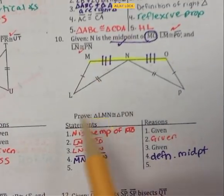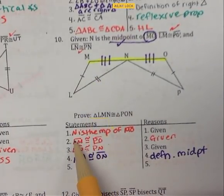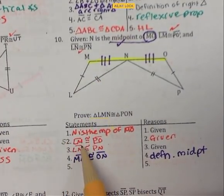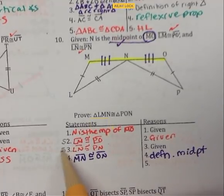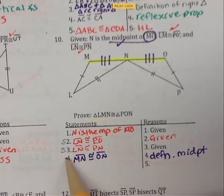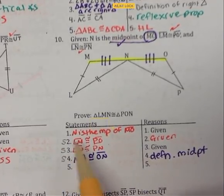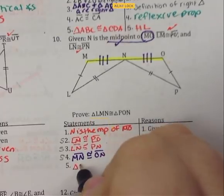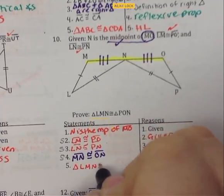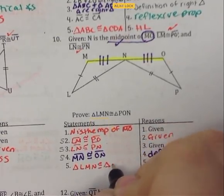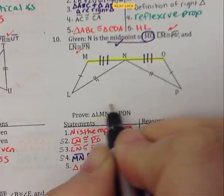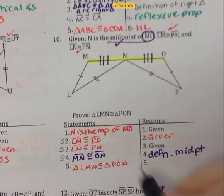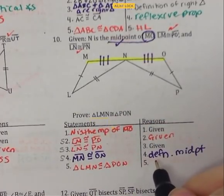Going back through: I have a side, a side, and a side — all segment symbols, so three sides. That means we should have side-side-side. So triangle LMN is congruent to triangle PON, which came directly from here, because of side-side-side.